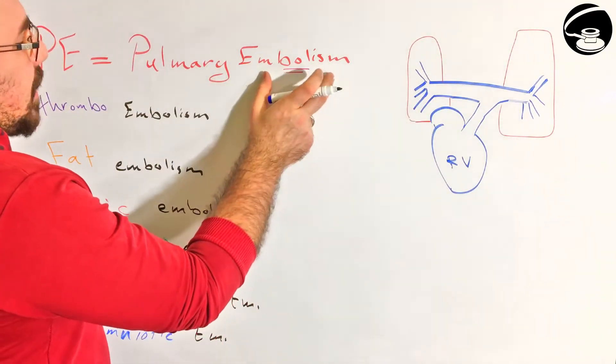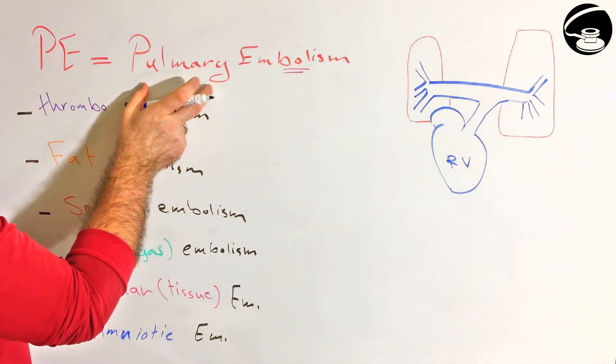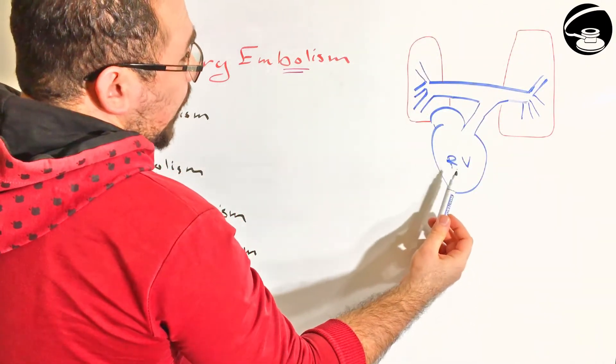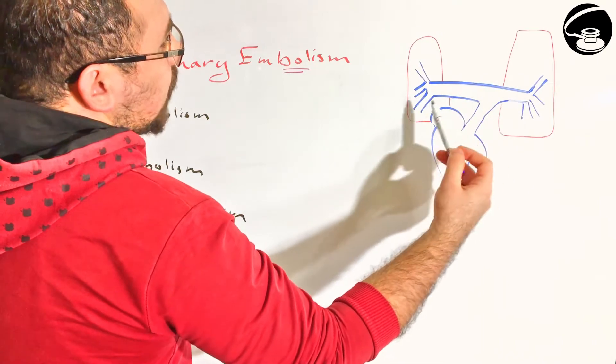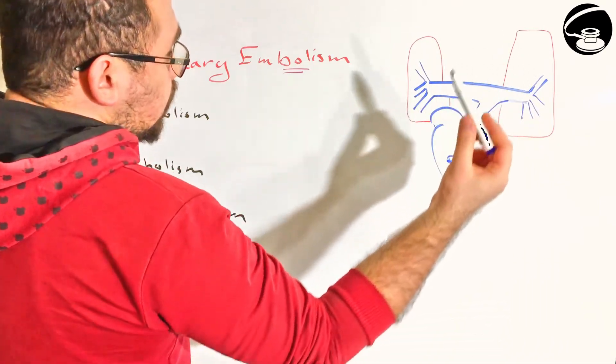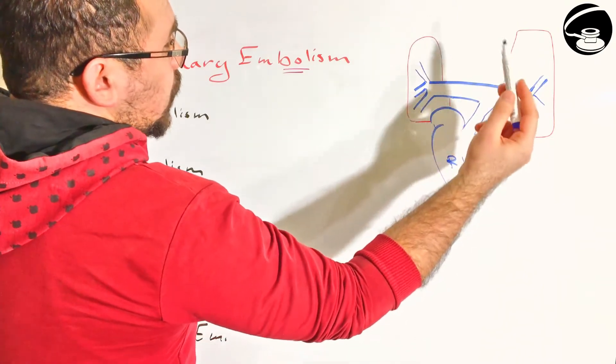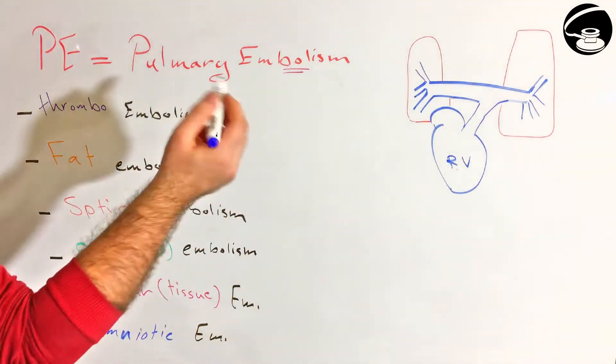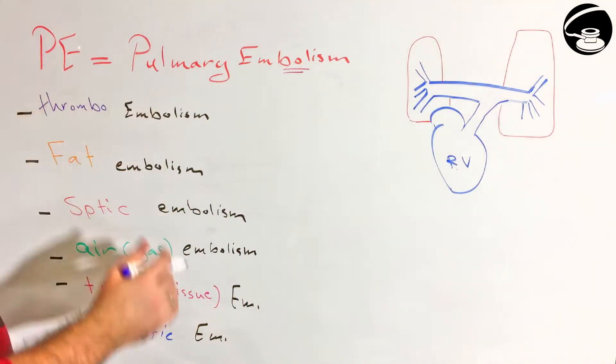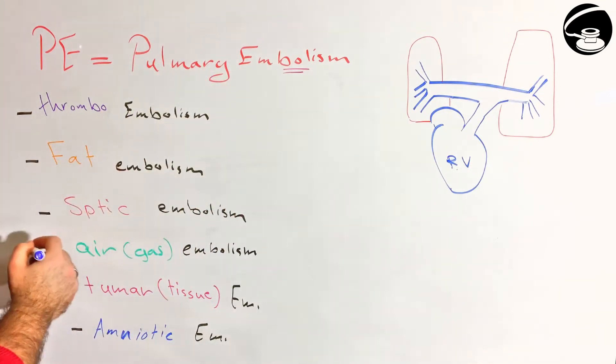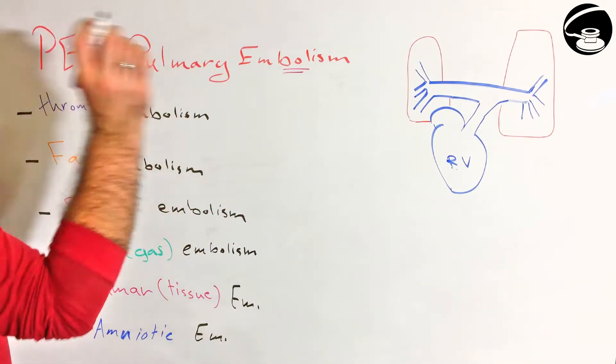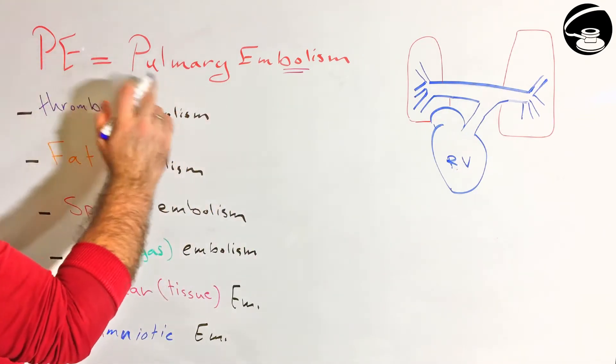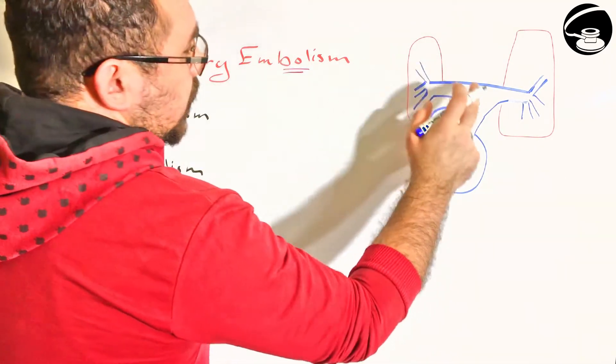Embolism means something blocks an artery. Pulmonary embolism is the pulmonary artery that goes to the lung, basically originating from the right ventricle, goes to the lung, branches to left and right, and then branches inside the lungs. That's the artery that brings the blood to the lungs. The lung will oxygenate it and then it goes back to the left atrium by the pulmonary vein.